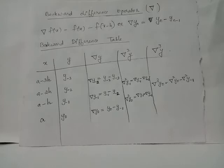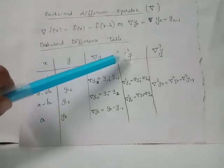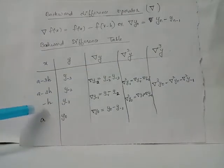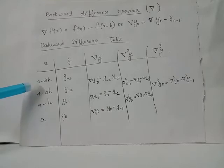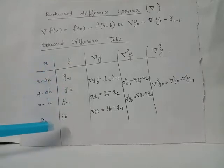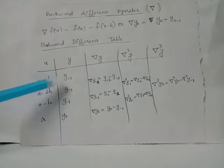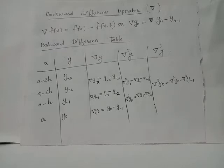The backward difference table has input values x and output values y. It includes the first, second, third backward differences, and so on. The input values are denoted as a, a minus h, a minus 2h, a minus 3h, with corresponding output values y_0, y_{-1}, y_{-2}, y_{-3}. The negative suffixes indicate the backward difference operator's output.